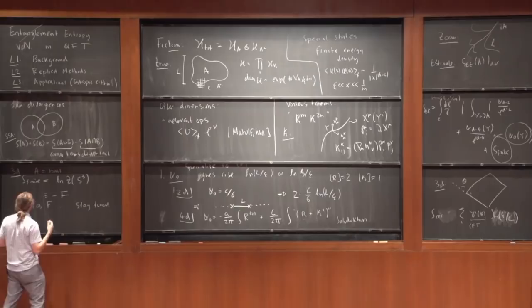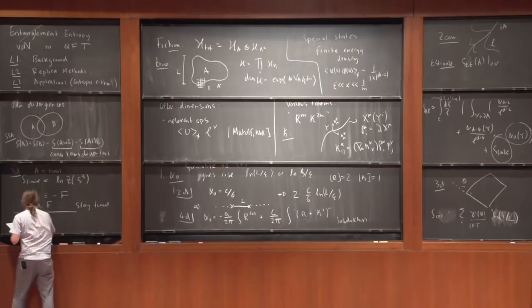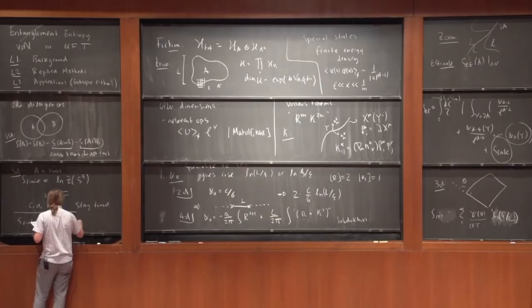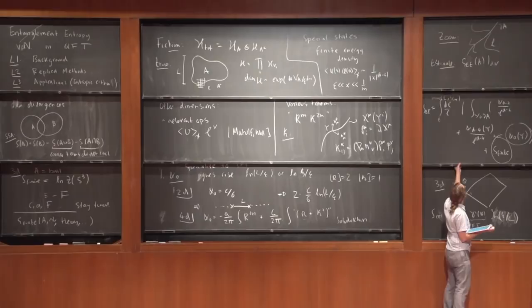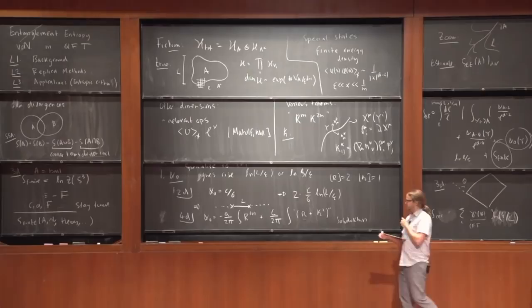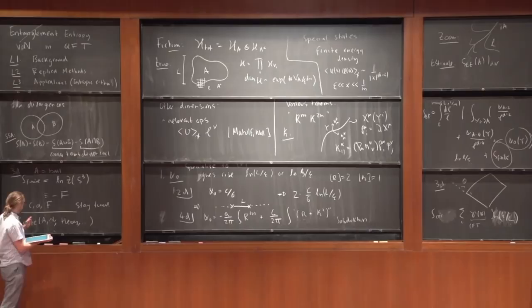I would like to say that S-finite in general, for any state, depends on the region A, the state, the theory, and all sorts of things. For example, in four dimensions you might say S-finite doesn't make any sense because integrating gives a log divergence in four dimensions, so changing the cutoff changes S-finite. But it changes S-finite in a very particular way depending on these geometric quantities. If you vary those other quantities, you can make sense of S-finite. A lot of what I've focused on in studying entanglement in QFT is trying to extract interesting information from this.